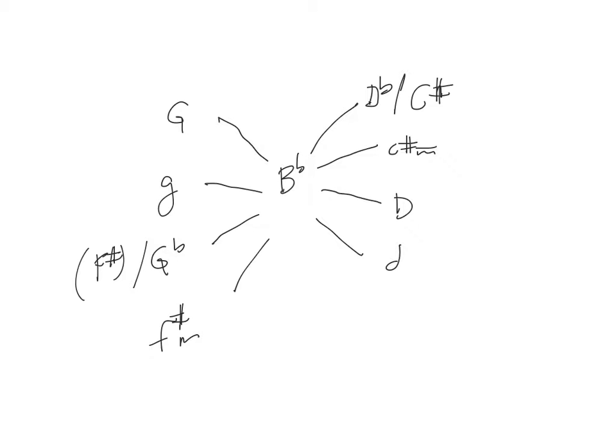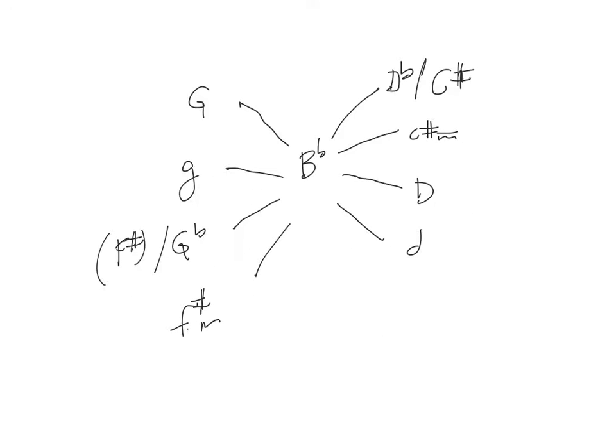Although this is not a true third, it is in the aural sense. Remember that enharmonic equivalents play a big role in the late Romantic period. So these are all of the possible mediant relations to B-flat: up a major third, up a minor third, down a major third, down a minor third.